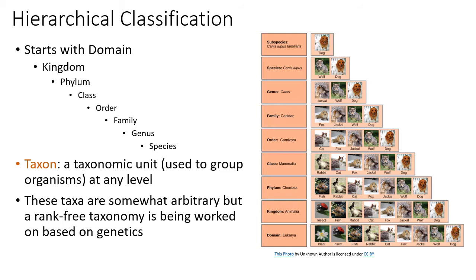These are somewhat arbitrary taxa, because who decides what similarities create a genus versus an order? A rank-free taxonomy is currently being worked on that looks more at evolutionary relationships and is based on genetics.